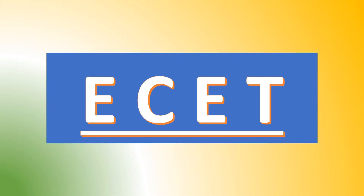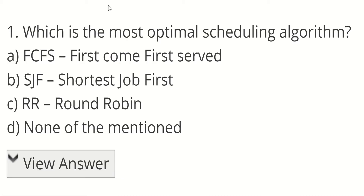Hello guys, welcome back to another video in this OS series. In this video we are going to solve the OS paper of AP 2020. Let's start with our bonus question: which is the most optimum scheduling algorithm? The options are First Come First Serve, SJF (Shortest Job First), Round Robin, or none of the mentioned. Comment your answer and let me know. The answer will be explained at the end of this video.